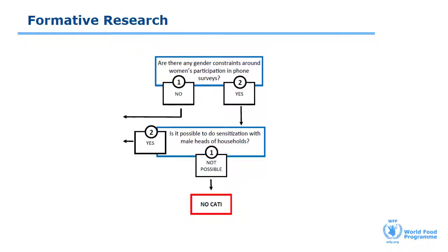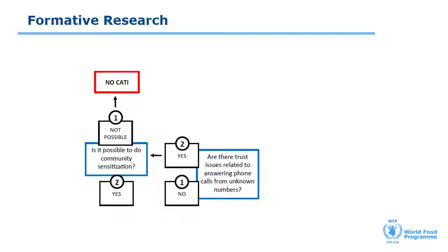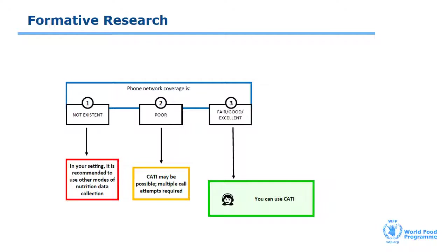After that, it's important to ensure that there aren't any gender norms that could prevent women from participating in phone surveys, such as not being allowed to talk on the phone with an unknown person, especially if it's a male operator. If there are such constraints related to women's participation, it's important to do sensitization activities, especially among the male members of the community. Another key consideration is trust issues related to answering phone calls from unknown numbers. In the case of such concerns, community sensitization should be done to explain the remote data collection process and its objective. If a designated hotline is used to contact respondents, that number should be shared during this sensitization. Finally, a key objective of the qualitative study is to assess the phone network coverage in the area. If the area has absolutely no network, then remote phone surveys are not feasible. However, in areas with poor network coverage, prior scheduling of phone interviews and multiple phone call attempts could ensure an adequate response rate.